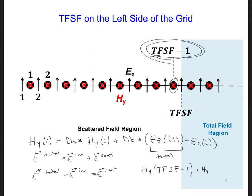We'll take the value that we just got from the update, and we're going to subtract DB times EZInc at the same location. Well, that's at I plus 1, so it'll be at TFSF.